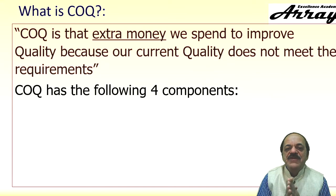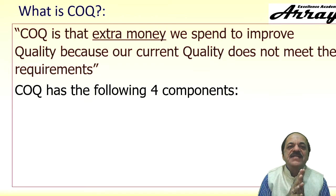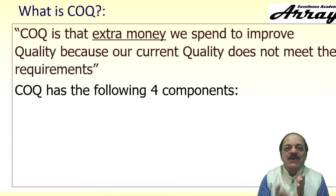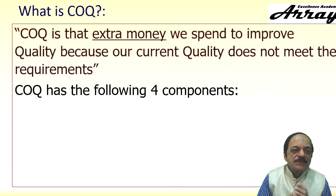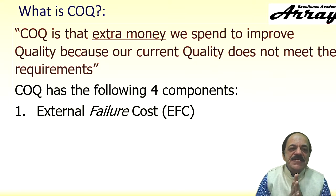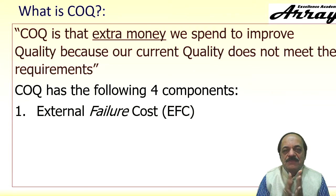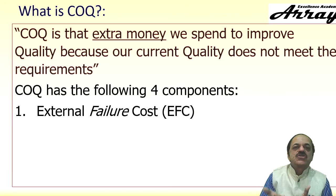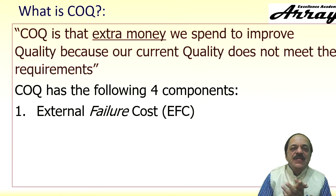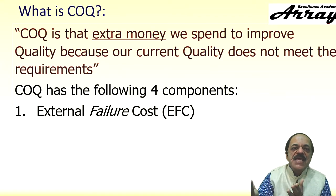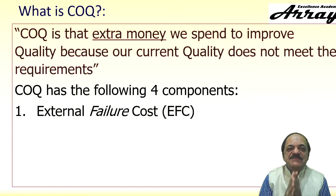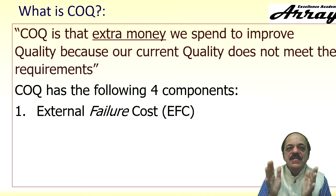Cost of quality has four components. Let us know these four components because this will help you recognize where money is being lost and also show savings for the company. The first component is external failure cost. The product goes to the customer's location where it fails, a customer complaint comes in, you may have to bring the item back to your factory at your cost, rework it, and then return it. This is huge money expenditure, and an added loss is that your company's brand image is also being eroded.